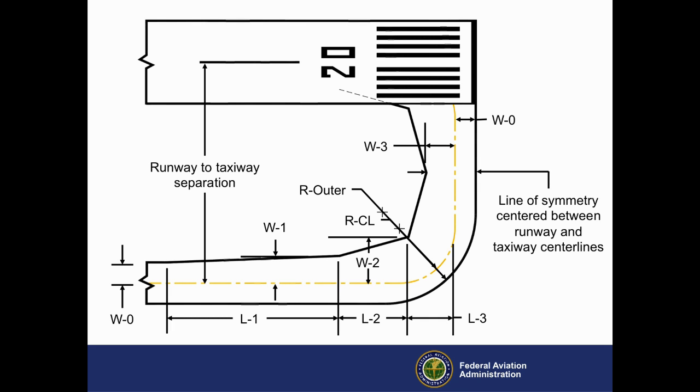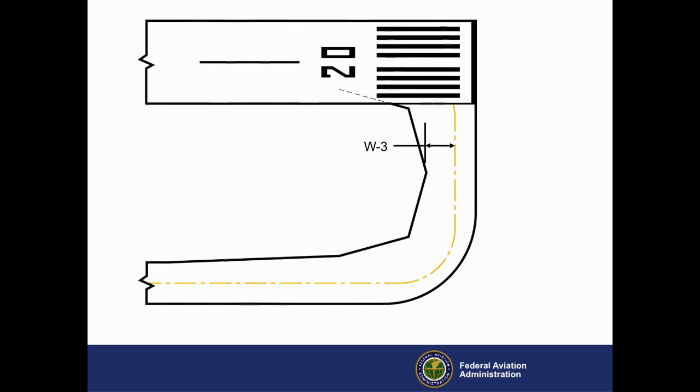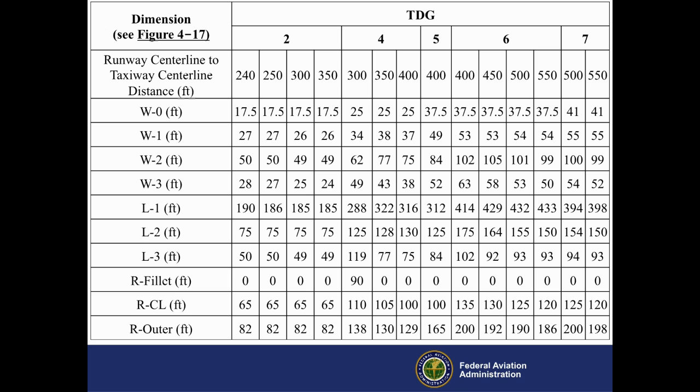Runway centerline to parallel taxiway centerline distances may be based on airspace requirements. As shown here, a right-angle runway entrance taxiway is similar to a crossover taxiway that includes a 180-degree turn. Note, however, that for runway entrance taxiways, W3 represents a different value: the distance between the crossover taxiway centerline and the innermost taxiway edge at the line of symmetry between the runway and the parallel taxiway centerlines. Another table in the AC lists the widths, lengths, and radii for right-angle entrance taxiways for all known combinations of TDG and typical runway centerline to parallel taxiway centerline distances. TDG-3 does not appear in this table because two standard 90-degree turns work for all typical TDG-3 runway to taxiway separations.